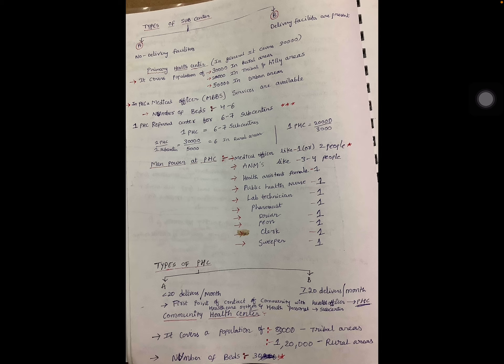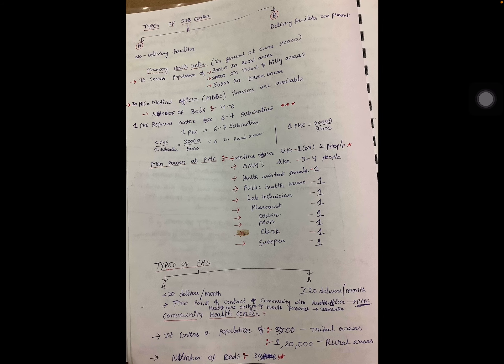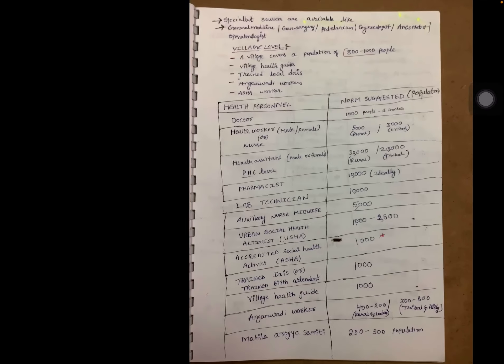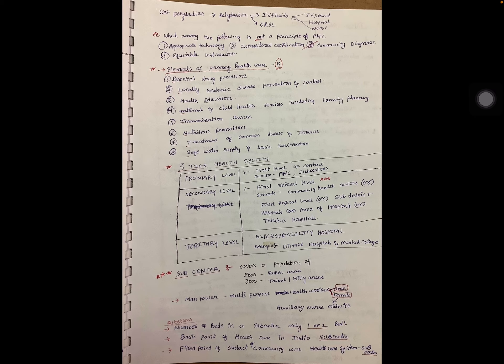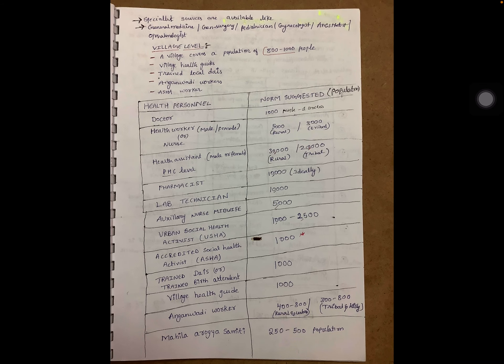A Community Health Center (CHC) covers 80,000 people in tribal areas and 1,20,000 people in rural areas. The number of beds at a CHC is 30 — compared to 4–6 at PHC and 1–2 at sub-centers. Specialist services available at CHC include general medicine, general surgery, pediatrics, gynecology, anesthesia, and ophthalmology. At the village level, a village covers 800 to 1000 people and includes village health guides, trained local dais, anganwadi workers, and ASHA workers.